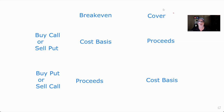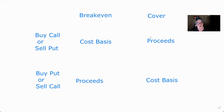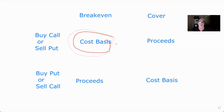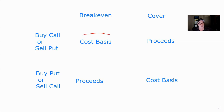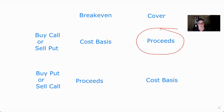Buying a call or selling a put — your break-even is your cost basis. After you exercise, you cover by selling the stock. So you bought a 50 call at three, break-even is 53 — that's your cost basis. If you exercise and then sell at 60, your proceeds are 60 and your gain is seven. It is not taxable until you complete the trade by selling the shares you bought.